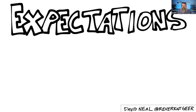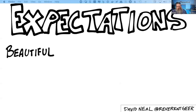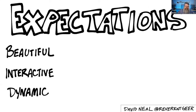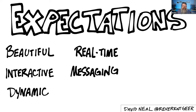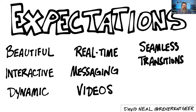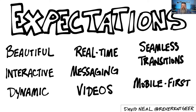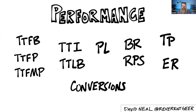Today, the expectations of visitors to web applications are demanding. They want your app to be modern and beautiful, interactive, dynamic, real-time with messaging and video support, seamless transitions between pages, and mobile-first. And there are so many ways of measuring performance: time to first byte, time to first paint, time to first meaningful paint, page load, time to interact, time to last byte, bounce rate, requests per second, throughput, error rate, and conversions from visitor to customer.